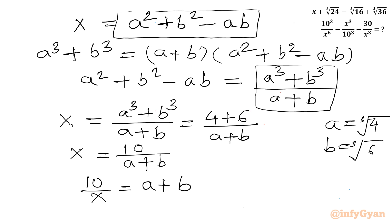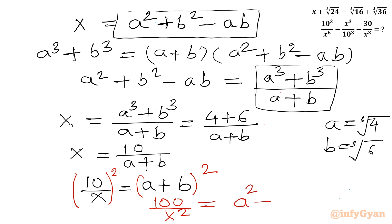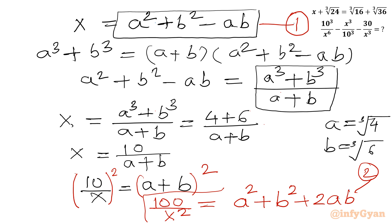Now squaring both sides of (a + b) = 10/x gives us 100/x² = a² + b² + 2ab. We also have x = a² + b² − ab. Let us label these as Equation 1 and Equation 2 respectively.